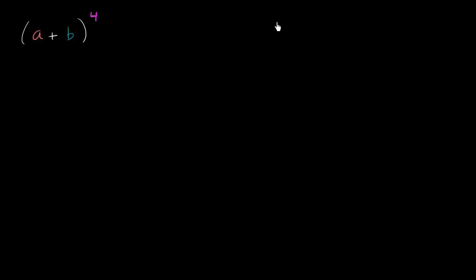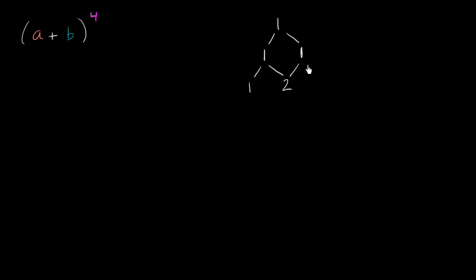Pascal's triangle starts with a one at the top. One way to think about it is it's a triangle where at each level you're counting the different ways you can get to the different nodes. So starting from one at the top, there's only one way to get to the next level on either side. At the third level, there's one way to get to the left node, one way to get to the right node, but there are two ways to get to the middle node — you could go left then right, or right then left.